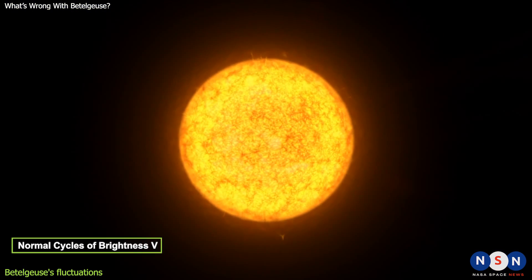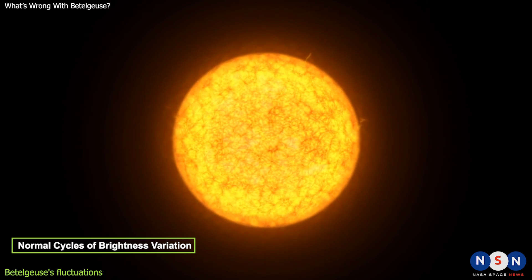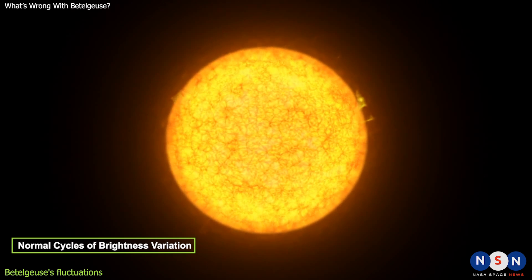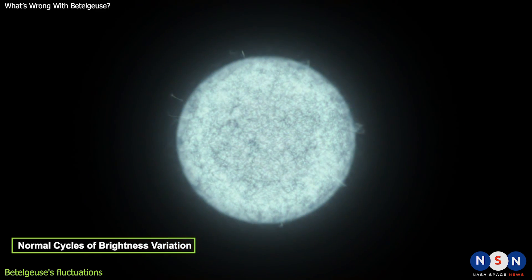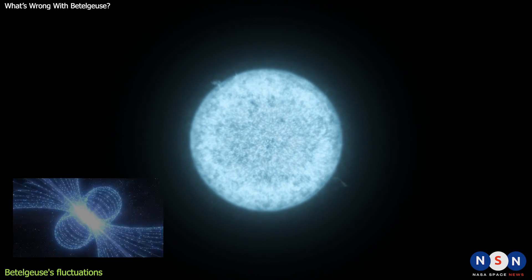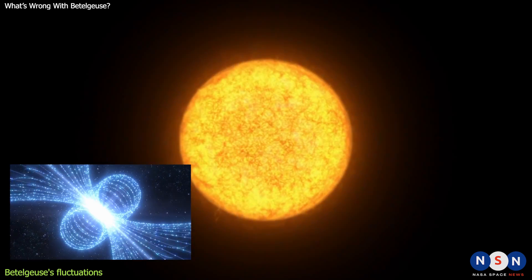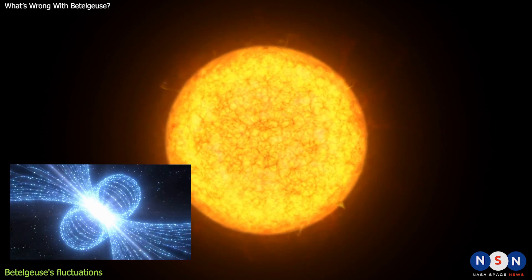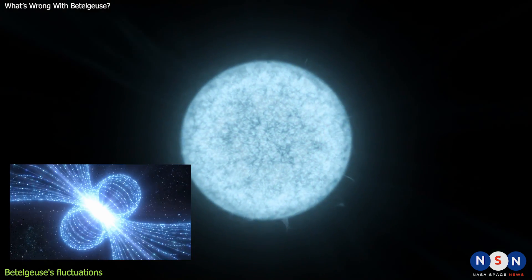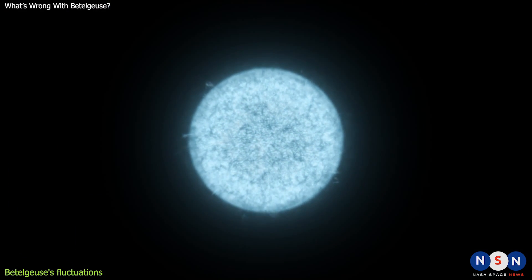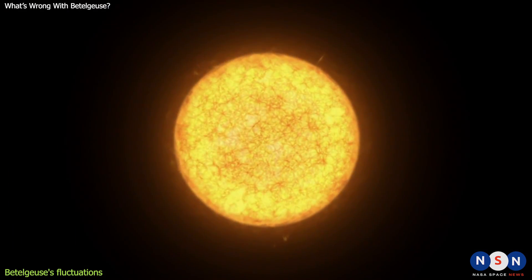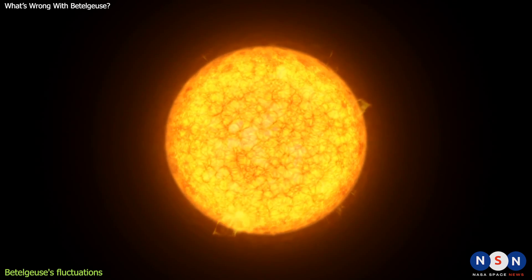It could be that Betelgeuse is simply going through its normal cycles of brightness variation. As we mentioned before, Betelgeuse has two main cycles. These cycles are caused by changes in the star's surface temperature and convection currents that move hot and cold gas around. Sometimes, these cycles can overlap and interfere with each other, resulting in more or less brightness than expected.